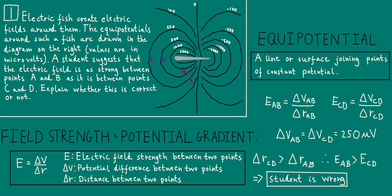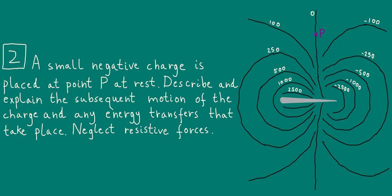Alright, so let's now move on to question two. A small negative charge is placed at point P at rest. Describe and explain the subsequent motion of the charge and any energy transfers that take place. Neglect resistive forces. You can see point P here and we're dealing with the same electric field around the electric fish as in question one. So please pause the video here and have a go at this question by yourself.